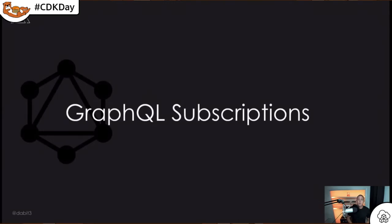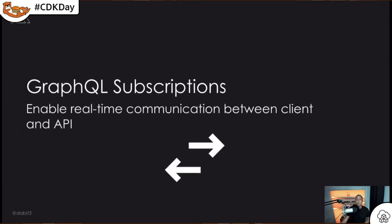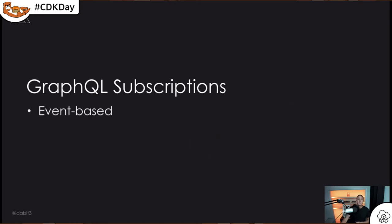Let's look at GraphQL subscriptions — the real-time aspect of GraphQL. Subscriptions enable real-time communication between the client and the API and are event-based. For a typical CRUD app, you might say: on create, on update, on delete — I want to subscribe to all of those changes. Then you have a subscription open between your API and your client, and any data from those create, update, or delete events will be sent down to the client.